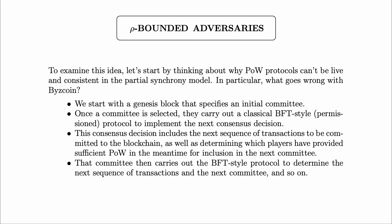The committee carries out the BFT-style protocol in order to implement the next consensus decision, which includes the next sequence of transactions to be committed to the blockchain as well as determining which players have provided sufficient proof-of-work for inclusion in the next committee. We then repeat this process — that committee carries out the BFT-style protocol to determine the next sequence of transactions and the next committee, and so on. We just have this rolling sequence of committees, each one carrying out this classical BFT-style protocol.